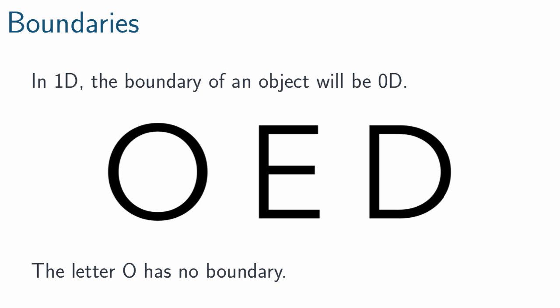In 1D, like letters of the alphabet if you considered them to be infinitely thin, the boundary of an object will always be 0D. Now I've drawn three letters here: O, E, and D. The letter O has no boundary at all. There are no stabby bits or dead ends. It's a perfect circle.